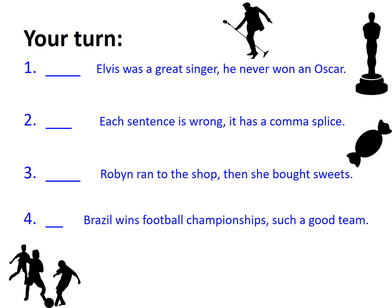So: 'Elvis was a great singer, he never won an Oscar.' We definitely have a comma splice here because I've got two independent clauses — I need something stronger than a comma to glue them together. The most obvious fix is a semicolon: 'Elvis was a great singer; he never won an Oscar.' I could also use a conjunction: 'Elvis was a great singer, but he never won an Oscar.'